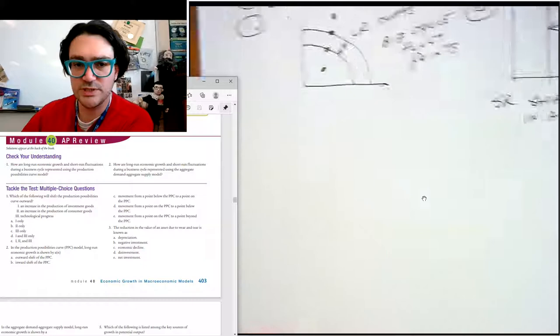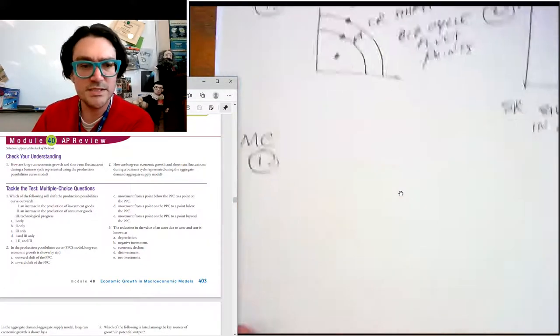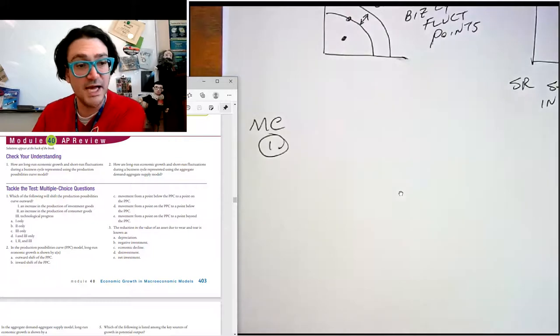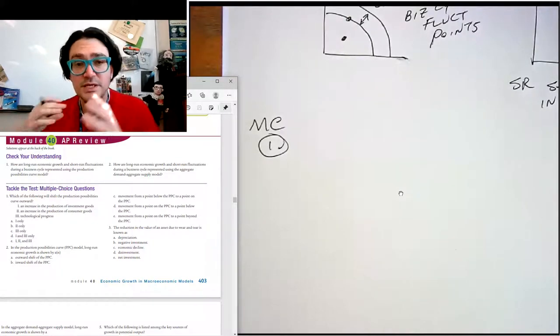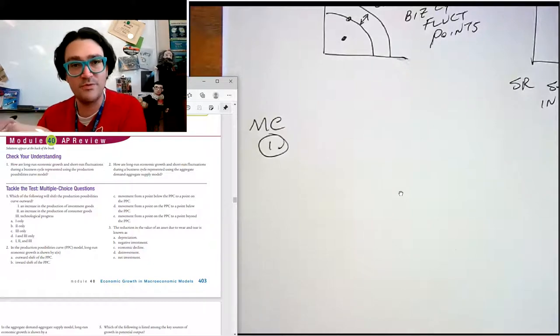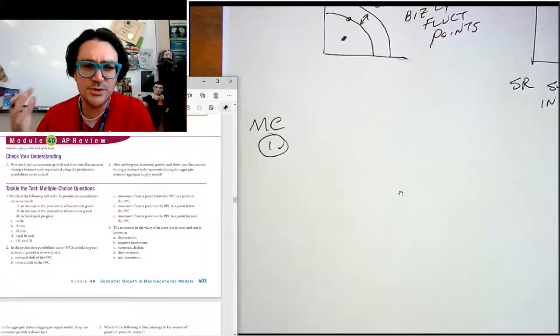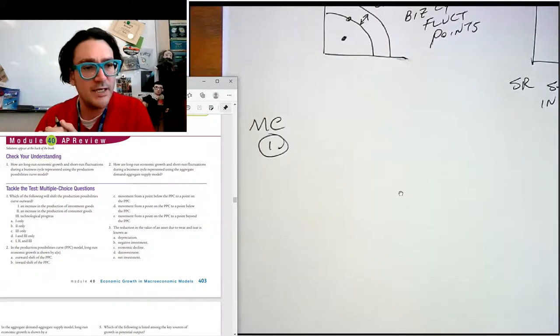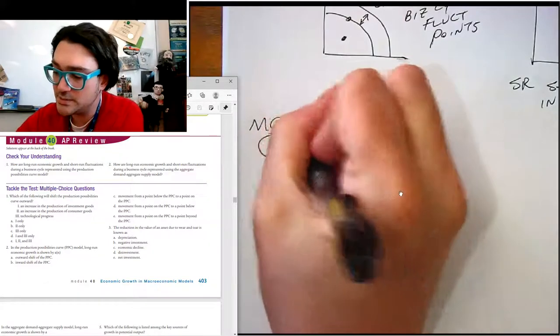Let's take a look at these multiple choice questions here. Number one says, which of the following will shift the PPC outward? Increase in the production of investment goods. That would do it because investment spending yields more capital formation, which yields economic growth. An increase in the production of consumer goods would not, it would just change where we are. And technological progress would also do that because that's how you combine the resources that you already have. So one and three, so that is D.